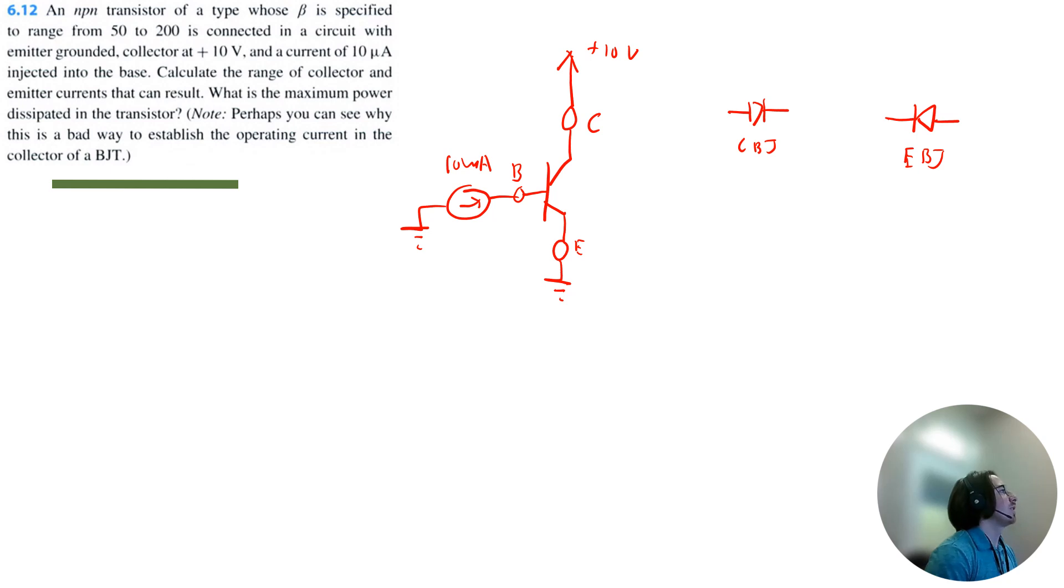So we know that for an NPN transistor the voltage drop from the base to the emitter, VBE, is 0.7 volts using the constant voltage drop for the diode. So that means going from base to emitter we have 0 volts at the emitter because it's grounded. Then we have 0.7 volts at the base, so the EBJ is forward biased.